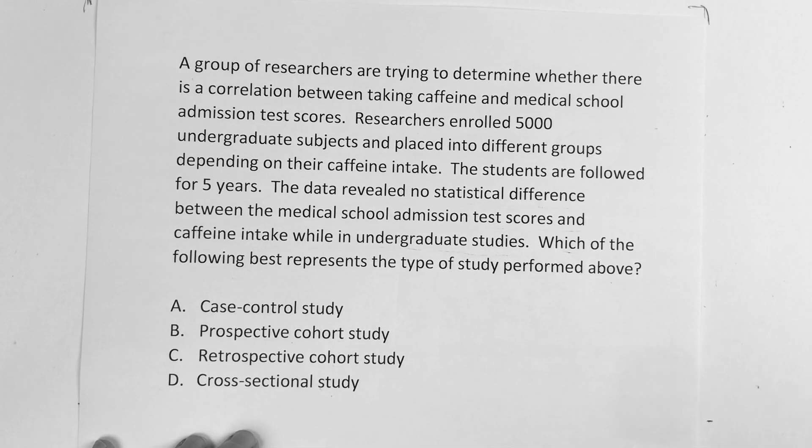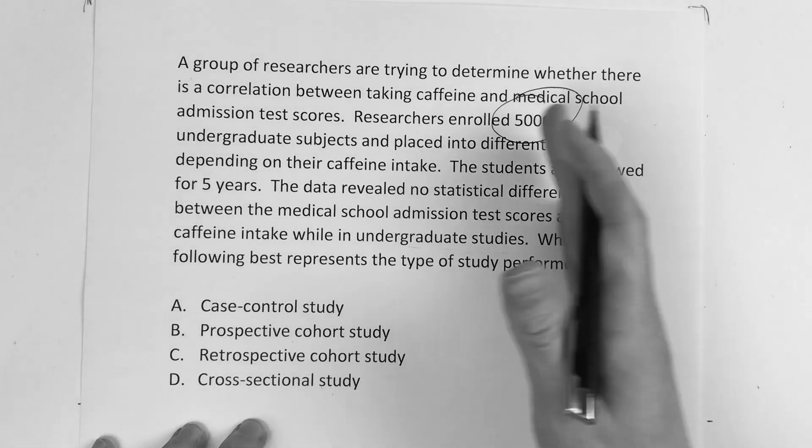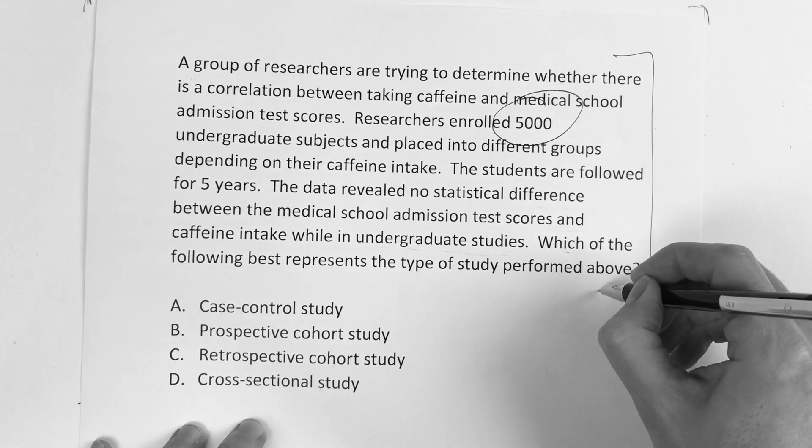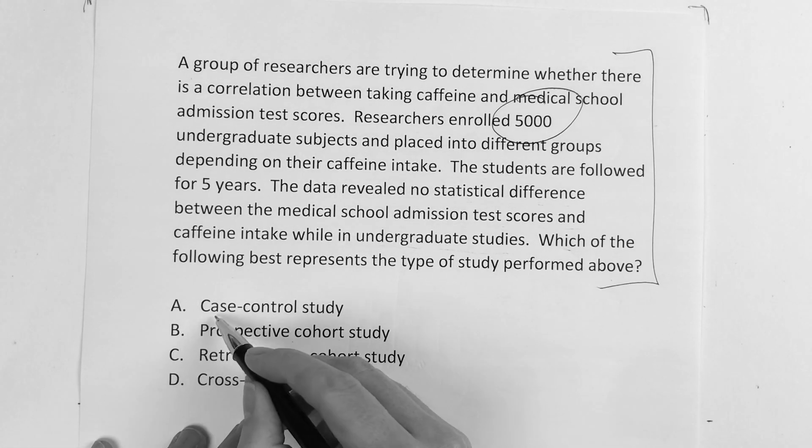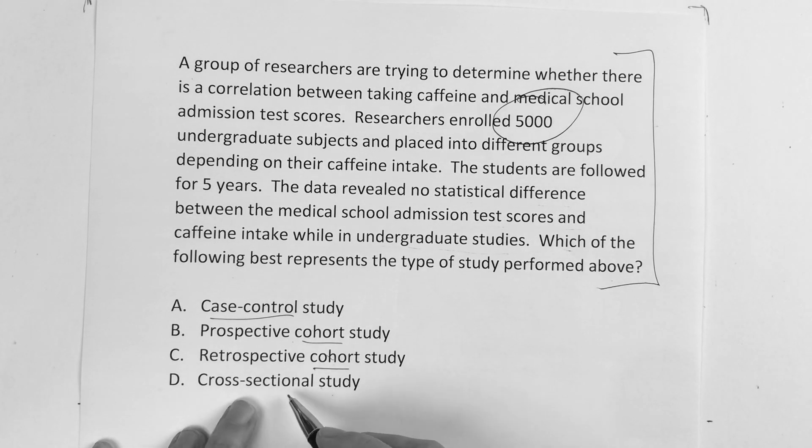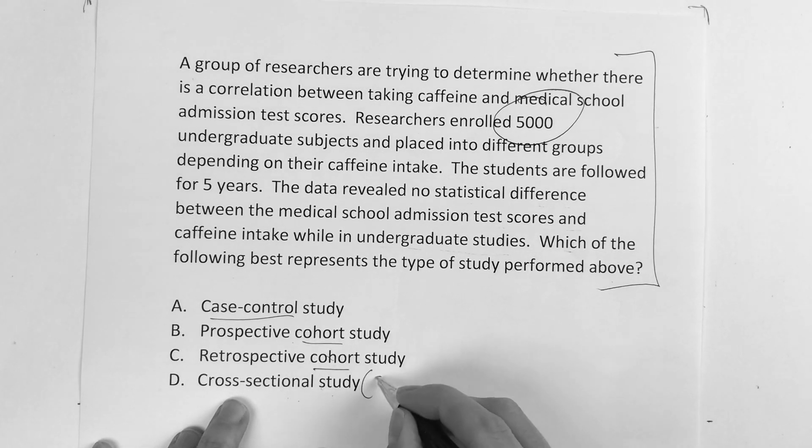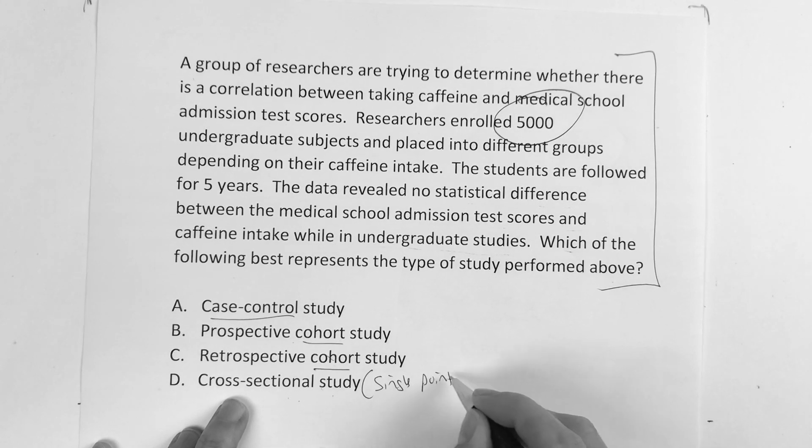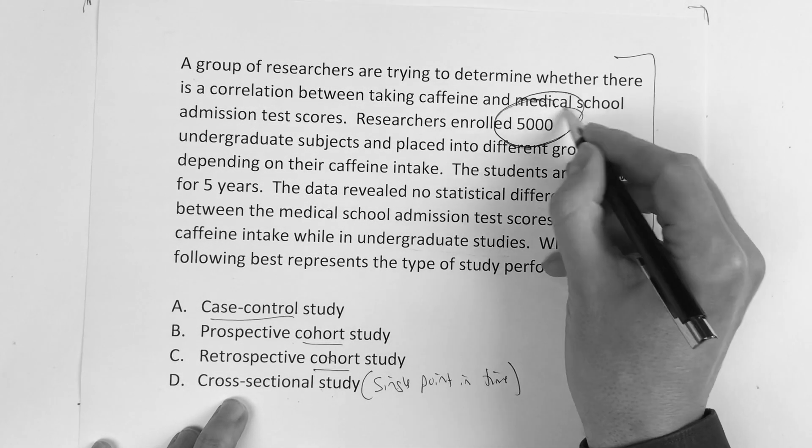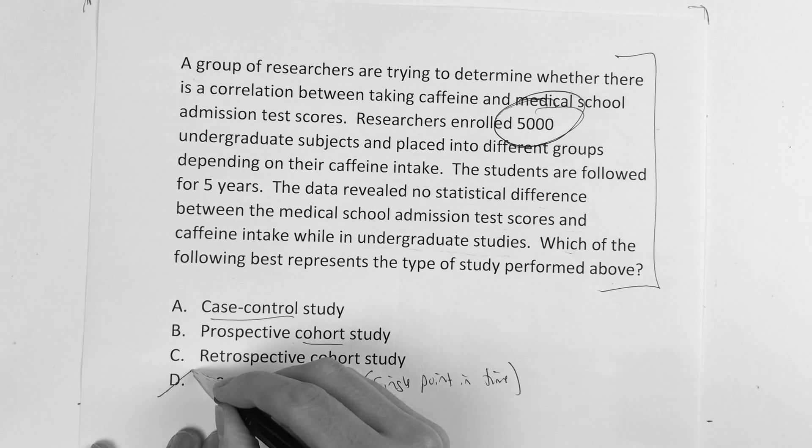So they got some people and then they followed them for several years. The key that you have to understand from this type of question, especially on the step, is cohort versus case control for the most part. Now, cross-sectional is just a single point in time. That is not what this is doing - they enroll people and they follow them for some time, so we can get rid of this guy.